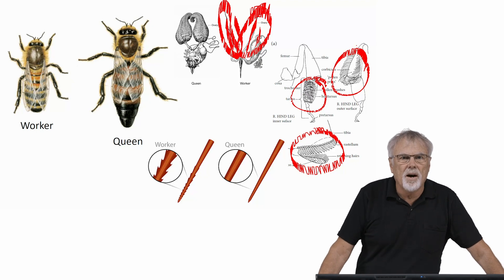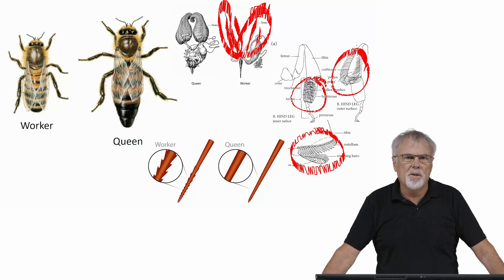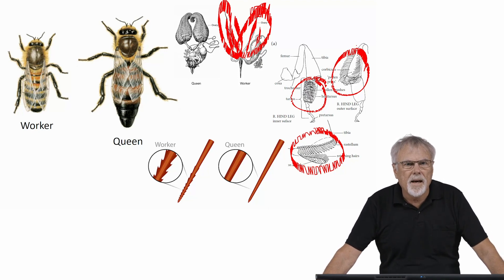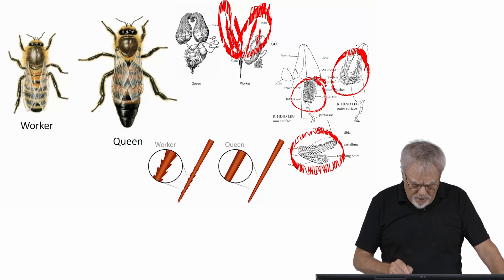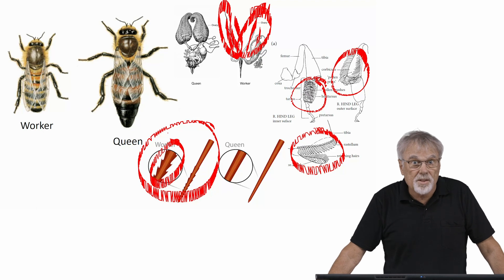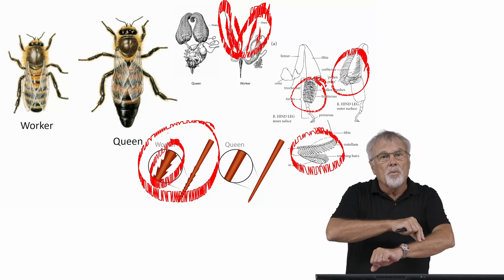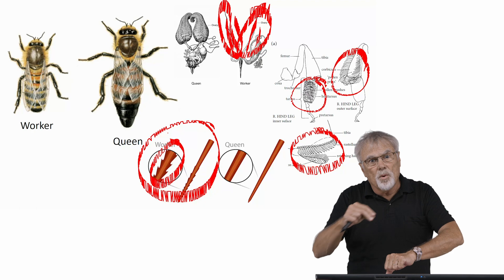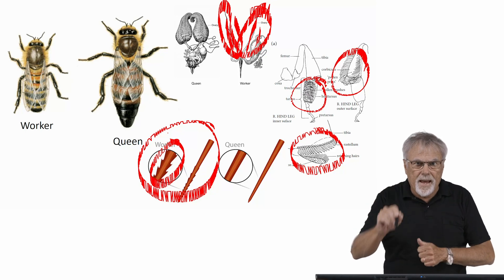Below, you can see the stingers of queens and workers. The stinger is a modified ovipositor. In most insects, females lay eggs through the ovipositor, but in the honeybee the ovipositor no longer serves to lay eggs — it is instead a defensive weapon. On the left, you can see the worker's ovipositor, and it is barbed. When it stings mammals like us, the stinger embeds in the skin, and when the worker tries to pull away it remains in the skin and her intestines are left behind. It is a defensive mechanism that ensures the stinger, once it lands on a target, will stay.